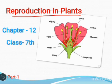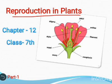The topics which we cover in this chapter are: what is reproduction, modes of reproduction, asexual reproduction, sexual reproduction, pollination, fertilization, formation of fruits and seeds, and the last one is seed dispersal.